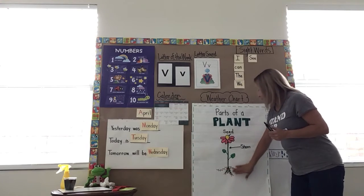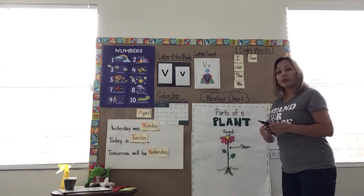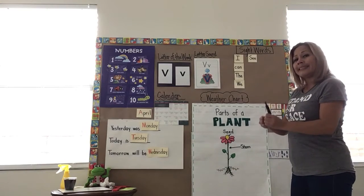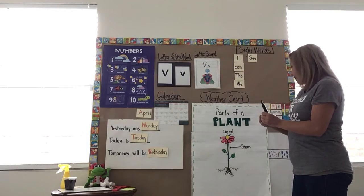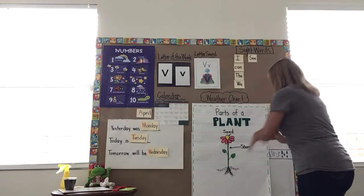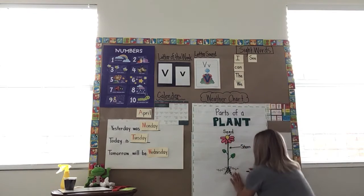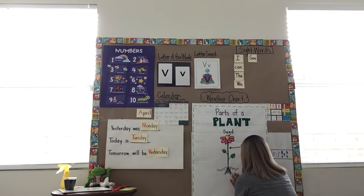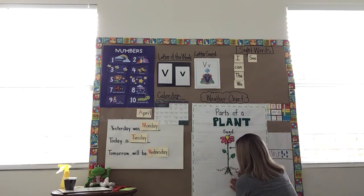Down here are the roots. The roots hold the plant in. The roots get the vitamins, nutrients, minerals, and water from the soil. So the roots are very important for the plant.